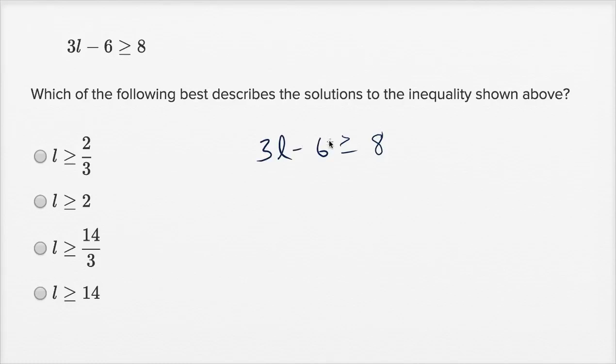So let's see what we can do to get just an L on the left-hand side. The first thing we might want to do is let's get rid of this subtracting of six, and the best way we can do that is we can add six. Let's add six to both sides.